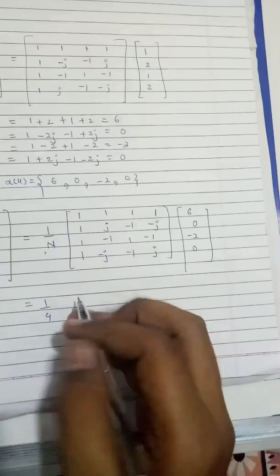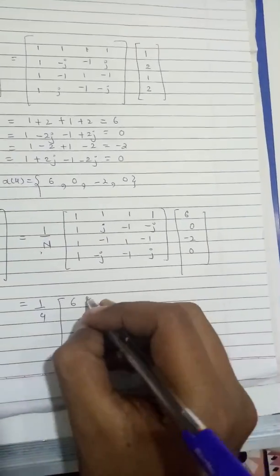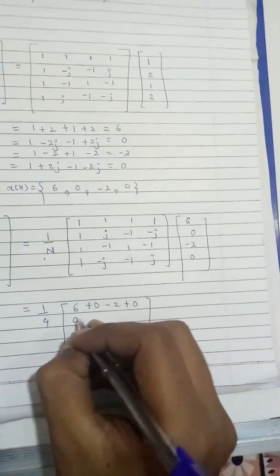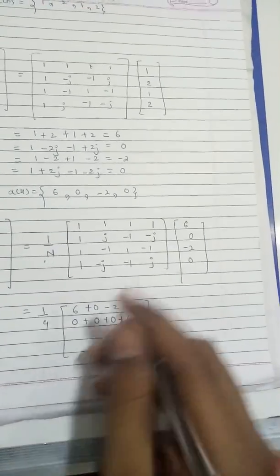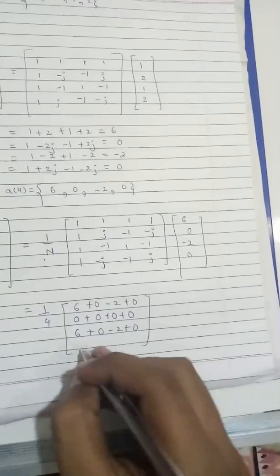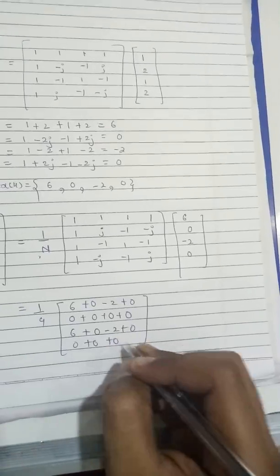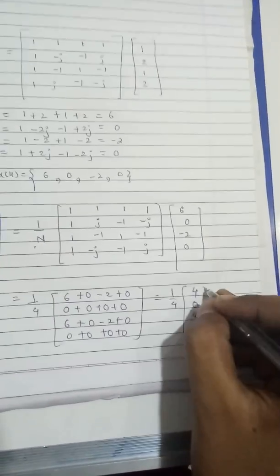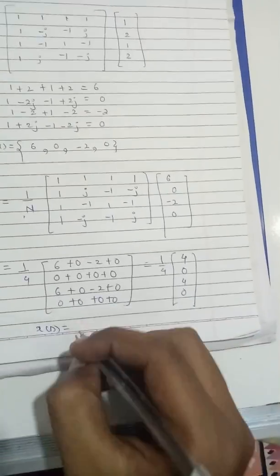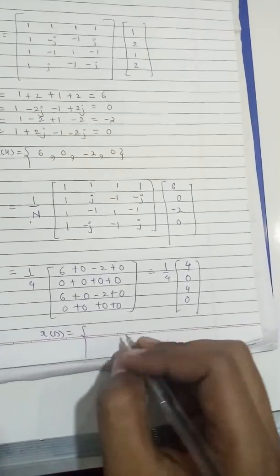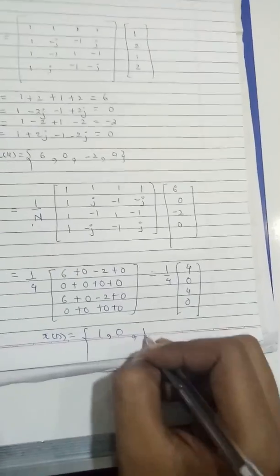We take the sequence [6, 0, -2, 0] and multiply by (1/4) times the inverse twiddle factor matrix. The computation gives: first element = (1/4)(6 + 0 - 2 + 0) = (1/4)(4) = 1; second element = 0; third element = 1; fourth element = 0. So the inverse DFT result x(n) = [1, 0, 1, 0].